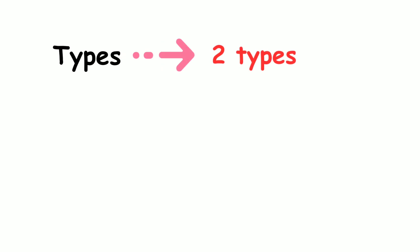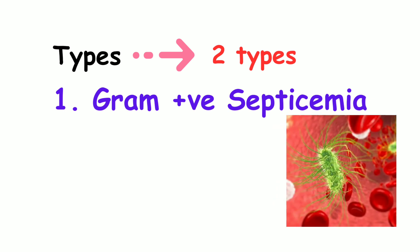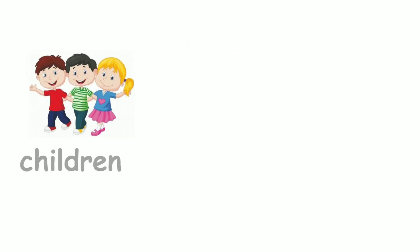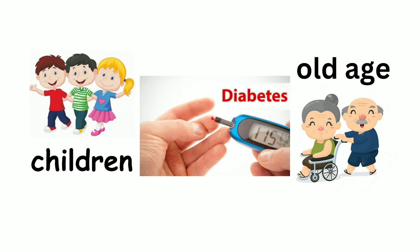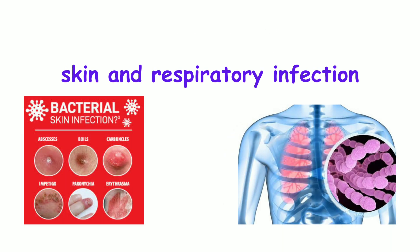There are two types of septicemia. The first type is Gram-positive septicemia, caused by Staphylococcus, Streptococcus, and Pneumococcus infection. It is common in children, old age, diabetics, and after splenectomy. The common origin is skin and respiratory infection.